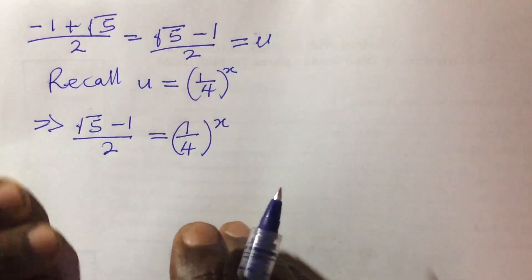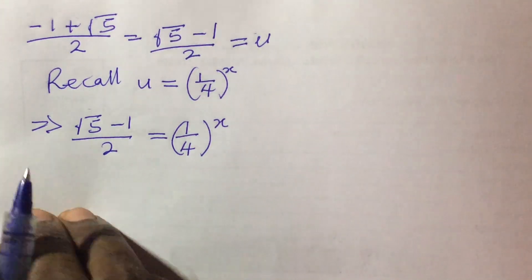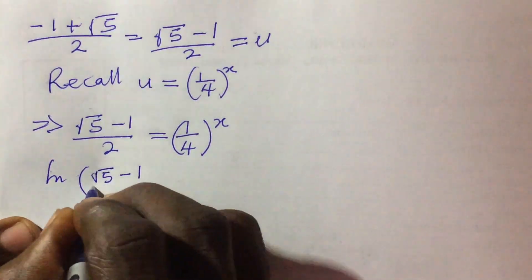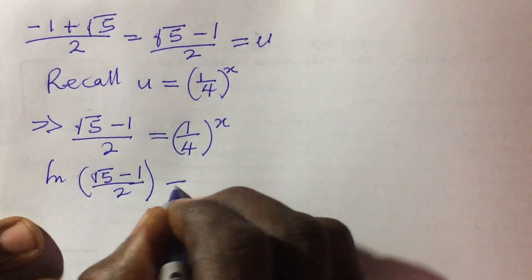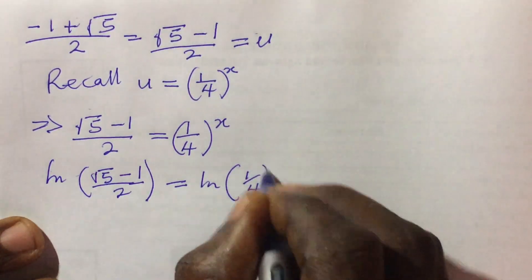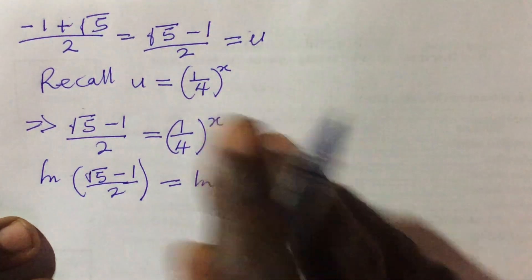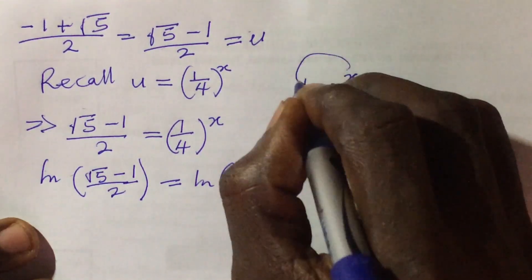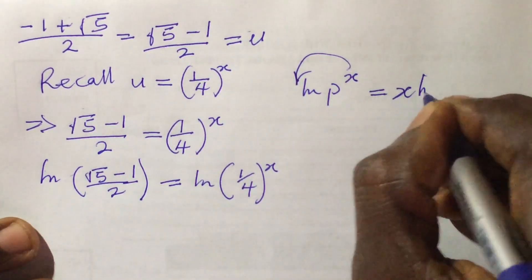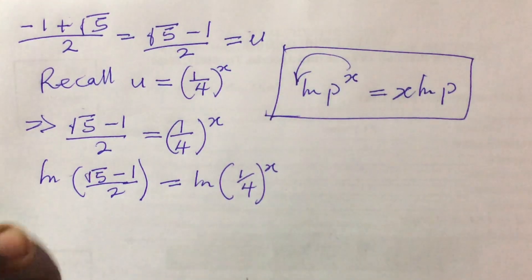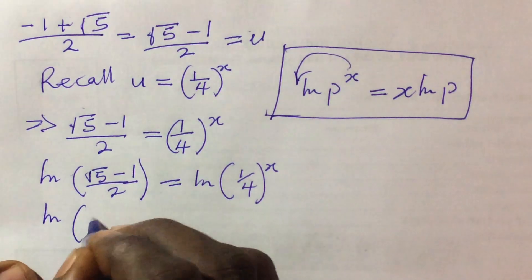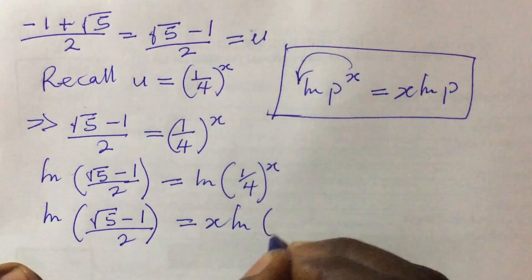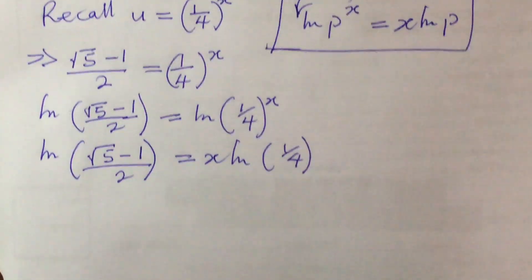We're looking for x, so we take the natural log of both sides. This gives us ln of (root 5 minus 1 all over 2) equals the ln of (1 all over 4) to the power of x. Recall the log law which says ln of p to the power of x equals x times ln of p. So the right-hand side becomes x times ln(1 all over 4).